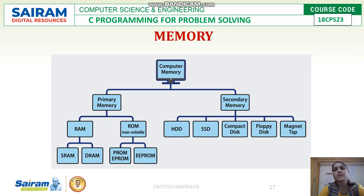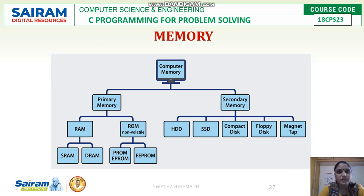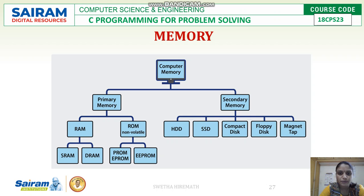Moving on to the memory unit, in a computer we have two types of memory: primary memory and secondary memory. Primary memory is directly connected to the computer and is present within the CPU.